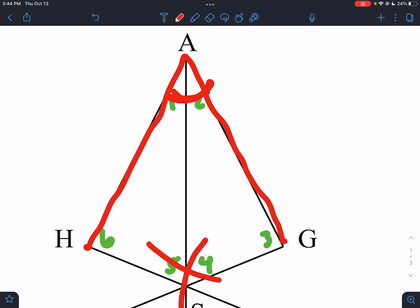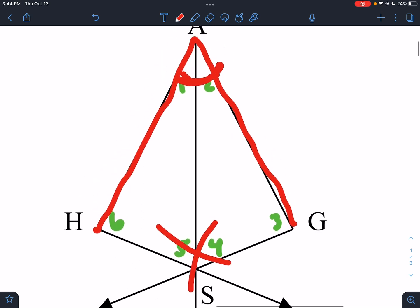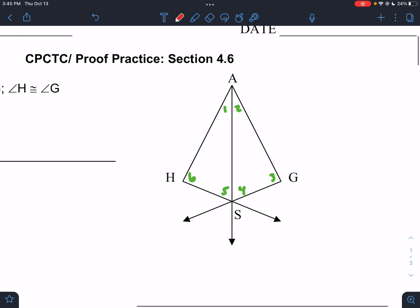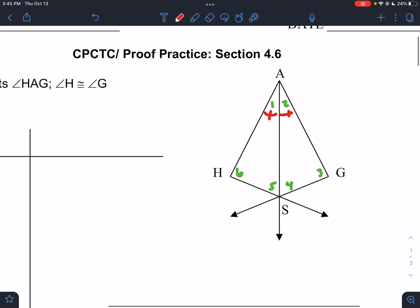Not this one. It doesn't say it bisects angle HSG. It doesn't say it bisects everything it touches. It bisects angle HAG, the angle at the top. So keeping that in mind, what do we know because of that? Well, we would know angles one and two are congruent.